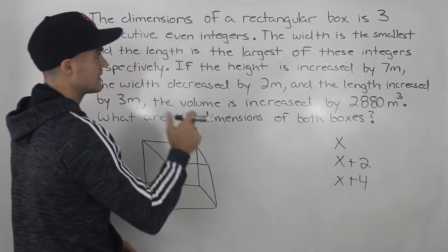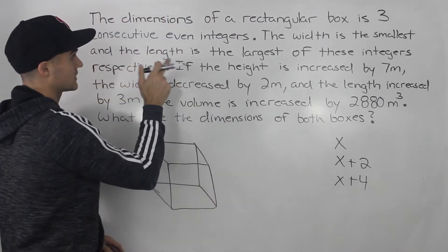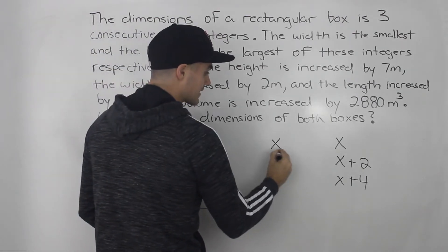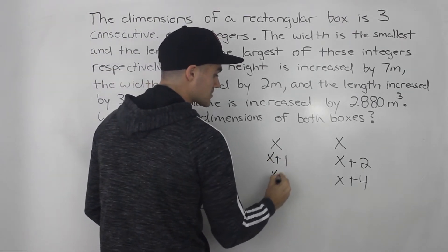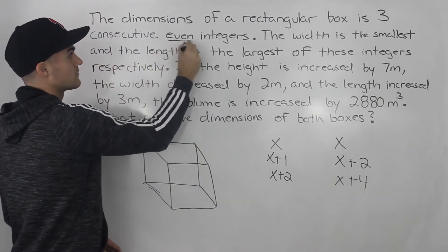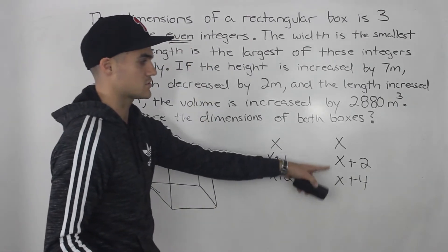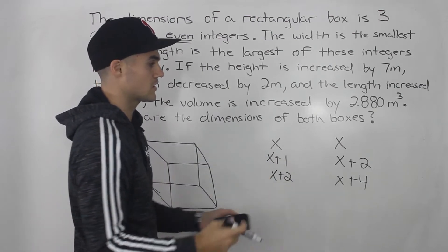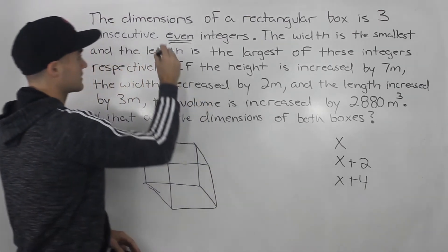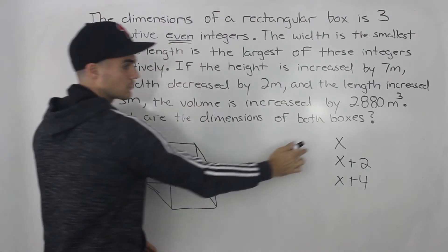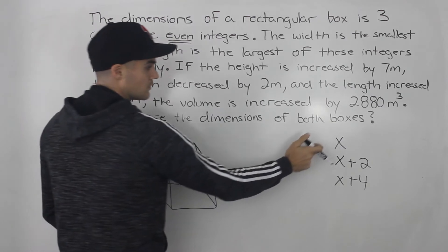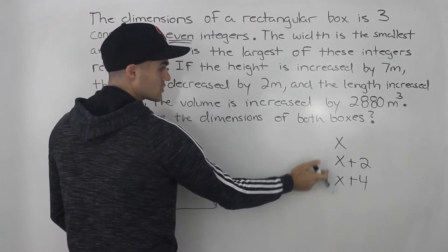Now if it said that the dimensions were three consecutive integers — not even — then it would just be x, x plus 1, and x plus 2. But because it says even, we use x, x plus 2, and x plus 4. The distance between each integer is two. The same applies if it said consecutive odd integers — we would represent it the same way.